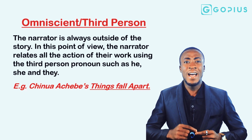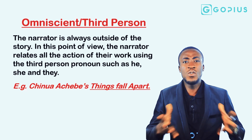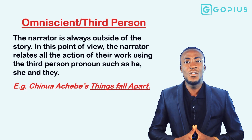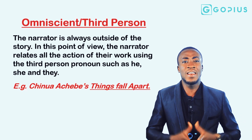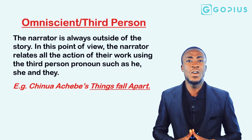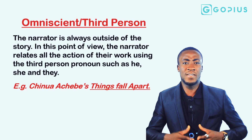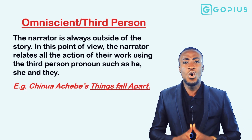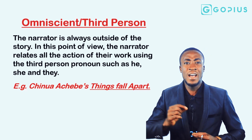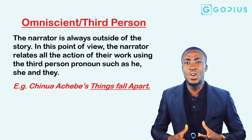That is why this third-person narrator is also known as the omniscient narrator — he can move into the stream of consciousness of the characters and tell the audience what is going on in their thought process. For example, when Okonkwo was discussing with his close friend and complaining about his son Nwoye's feminine nature, the narrator reveals that the friend was thinking that the boy took that trait from Okonkwo's late father, who was similarly inclined.